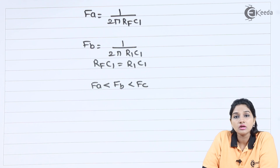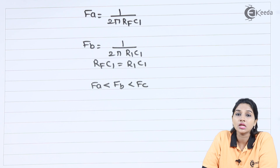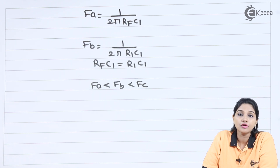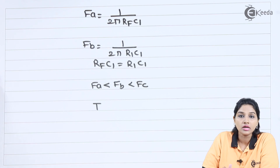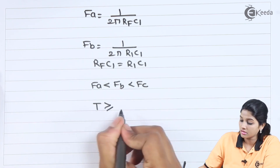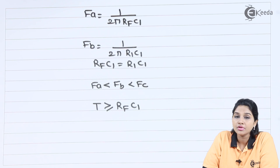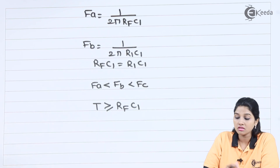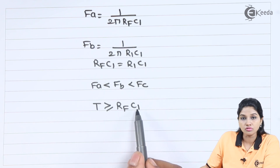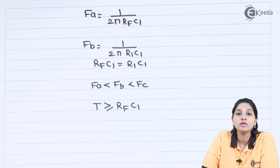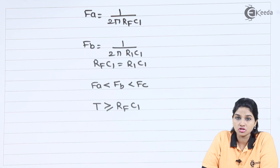Now let's see the condition that is required to be satisfied by the input signal in order to obtain a proper or accurate output at the differentiator circuit. The condition is: T must be greater than or equal to Rf·C1, where T is the time period of the input signal. If this condition is satisfied, we can get a proper or accurate signal at the output of the differentiator circuit.